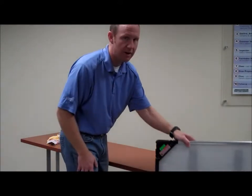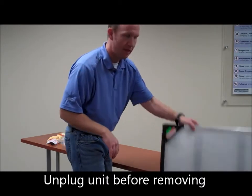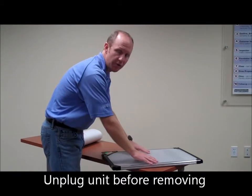First, take the BreatheEasy air cleaner out of the furnace. Unplug it from the electrical connection and pull it out. Then place the unit on a flat surface.